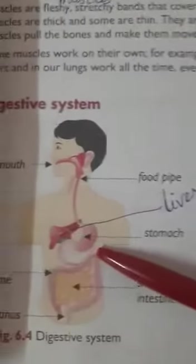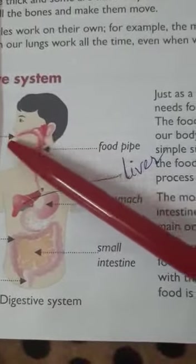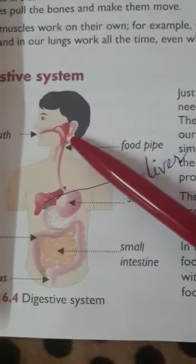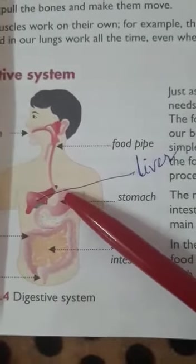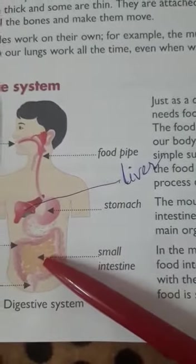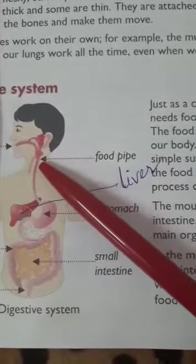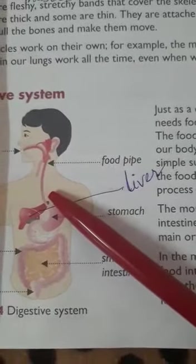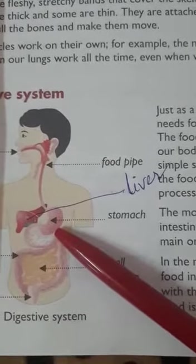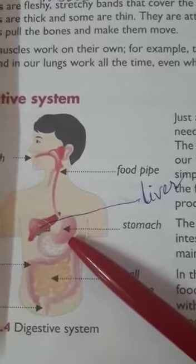From the food pipe, the food goes to the stomach. In the mouth it becomes soft and mixes with saliva, then passes through the food pipe to the stomach. From the stomach it goes to the small intestine, where absorption of food takes place. When we chew and swallow the food, it passes through the food pipe to the stomach, where the breakdown of food takes place — like a grinding process.